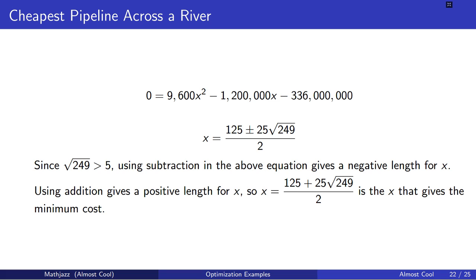So we get that x equals 125 plus 25 times the square root of 249, all over 2. That'll be the length of x that gives us the minimum cost.